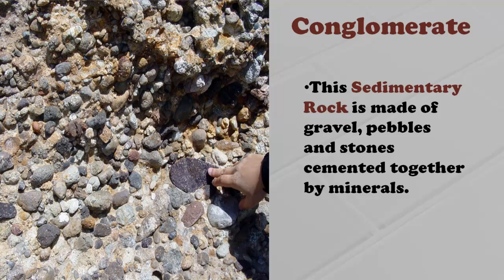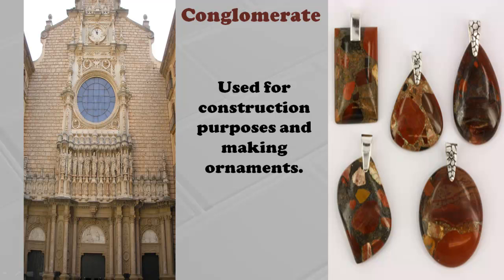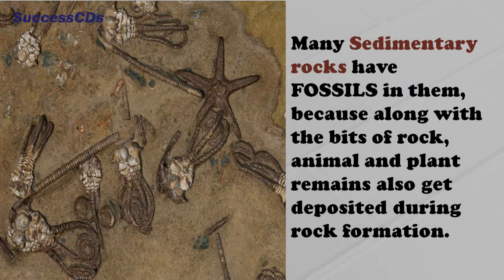Mudstone or shale is another sedimentary rock made of solidified clay and comes apart in thin layers. It is used in the making of bricks and cement. Conglomerate is a sedimentary rock made up of gravel, pebbles, and stones cemented together by minerals. As it can withstand weathering, it is used for construction purposes and making ornaments. Many sedimentary rocks contain fossils because animal and plant remains also get deposited during rock formation.